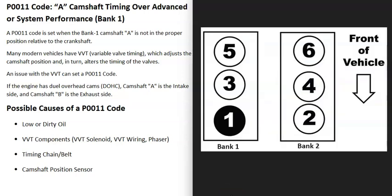If you have a V6 or V8 engine, the engine is going to have two banks. Bank one side of the engine is always the side with the number one cylinder. If you Google your engine's firing order or cylinder location, you can find the number one cylinder — that side is bank one and the opposite would be bank two.